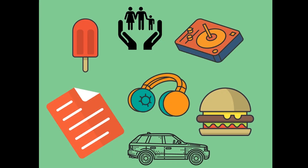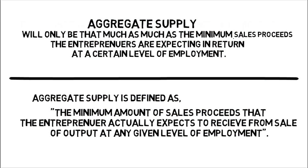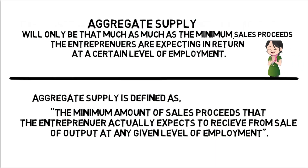In simple words, aggregate supply means the total amount of goods and services that a country produces. The above definition also means the same — just go through it once more and you will understand.